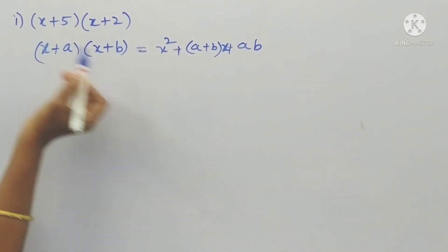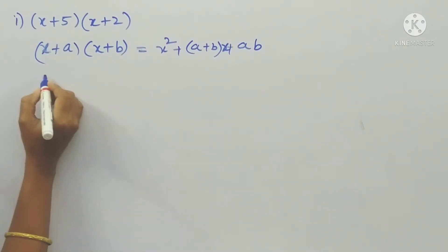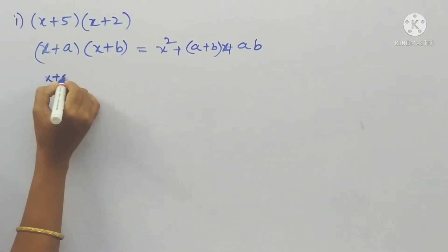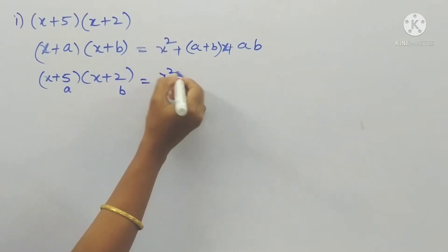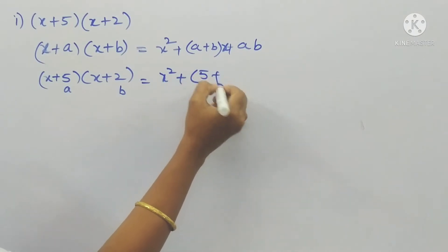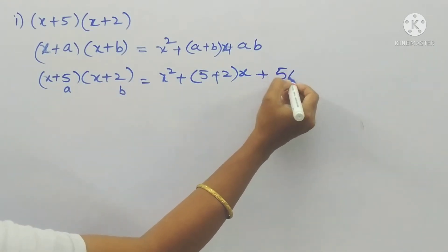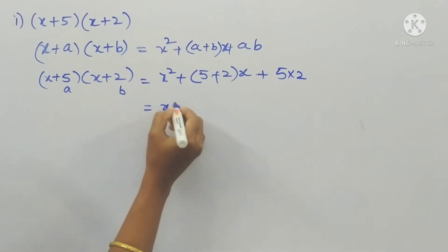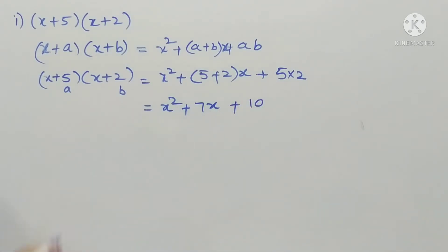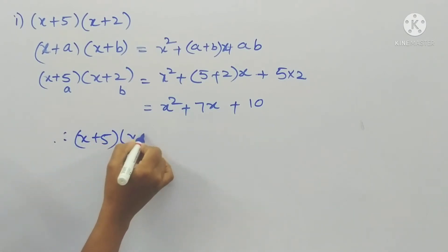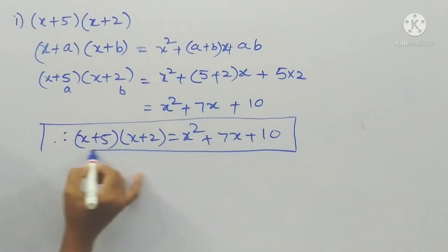Here, x is x, a is 5, and b is 2. So (x + 5)(x + 2): applying the identity, we get x² plus (5 + 2)x plus 5×2, which gives x² + 7x + 10. Therefore (x + 5)(x + 2) = x² + 7x + 10. This is the final answer.